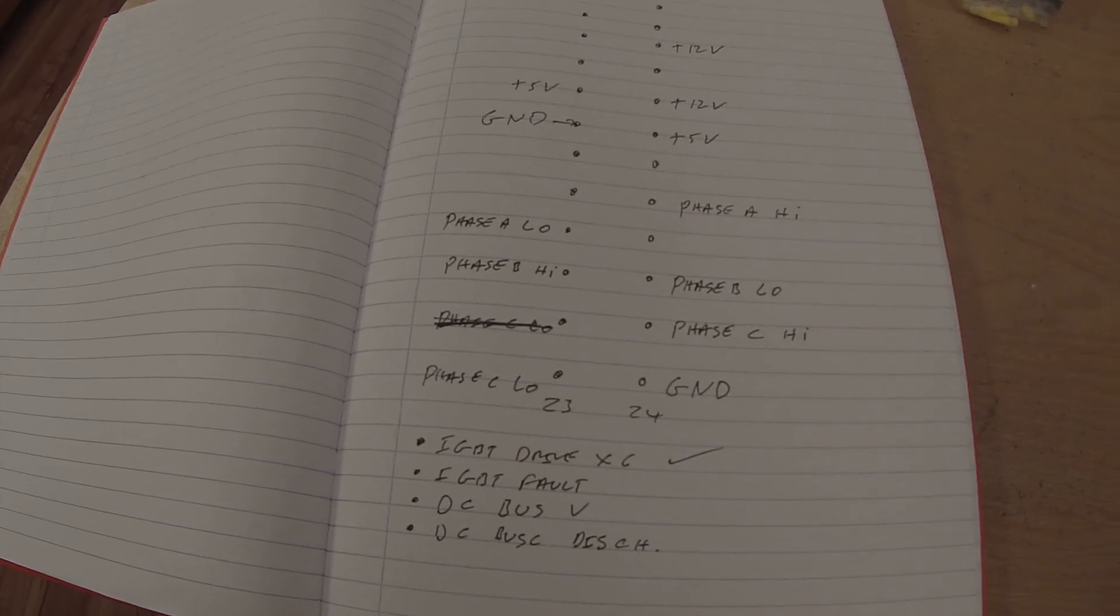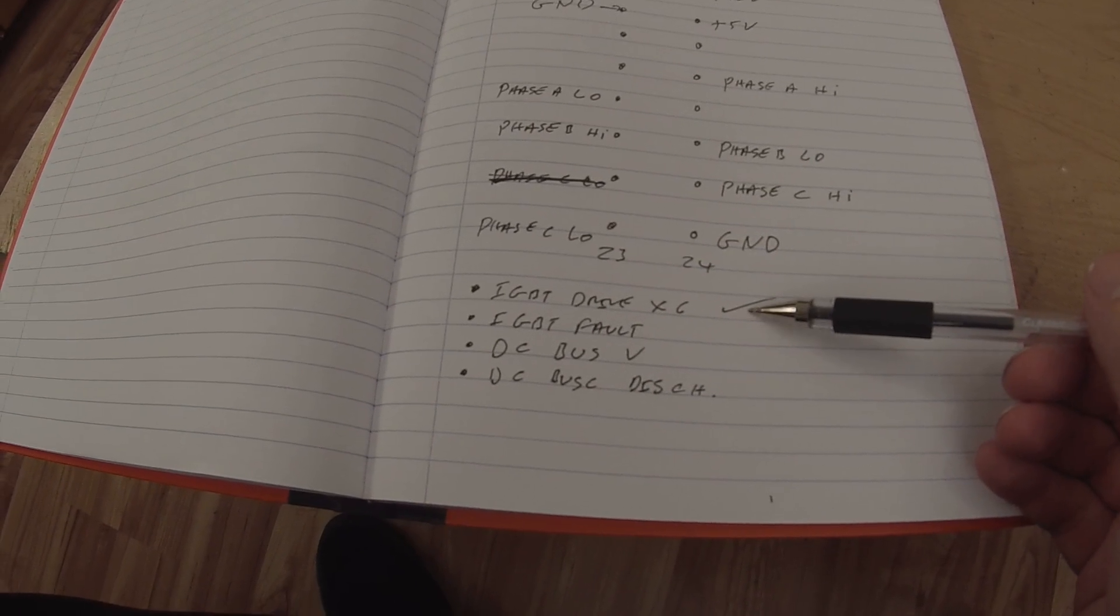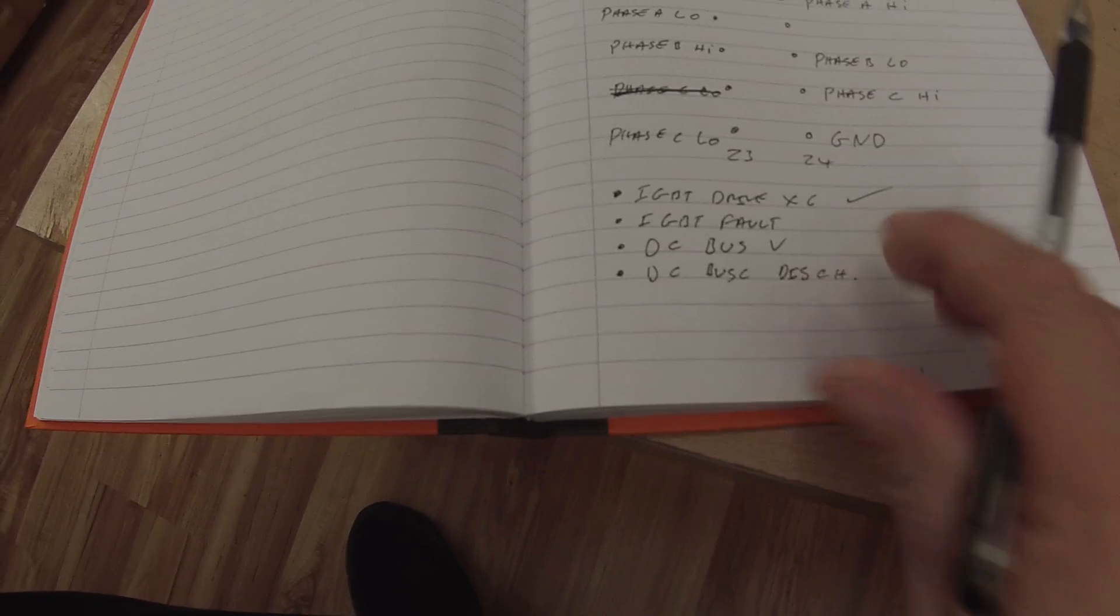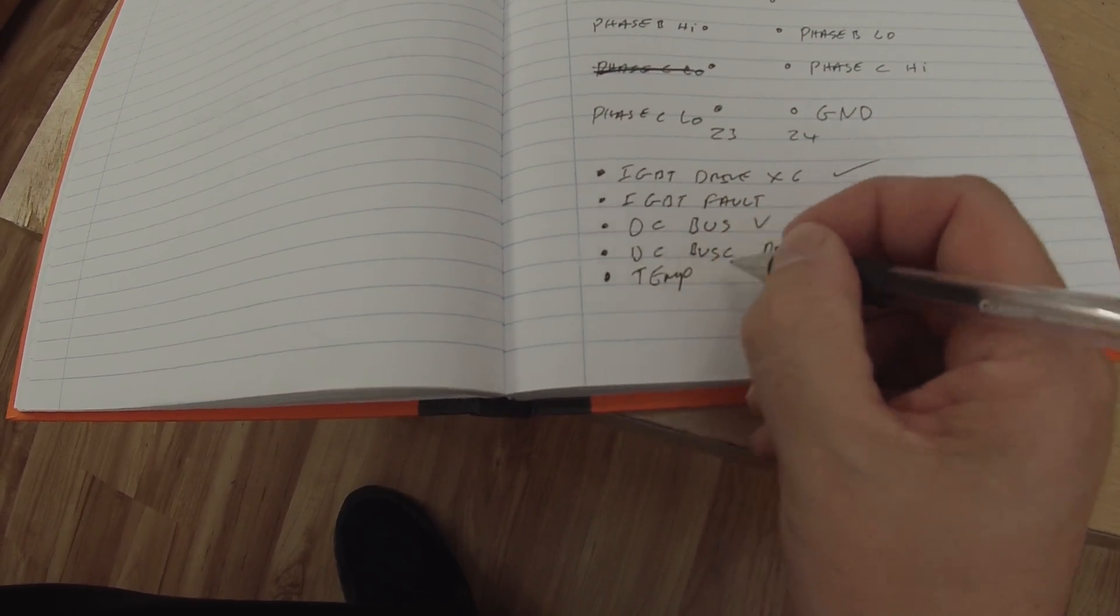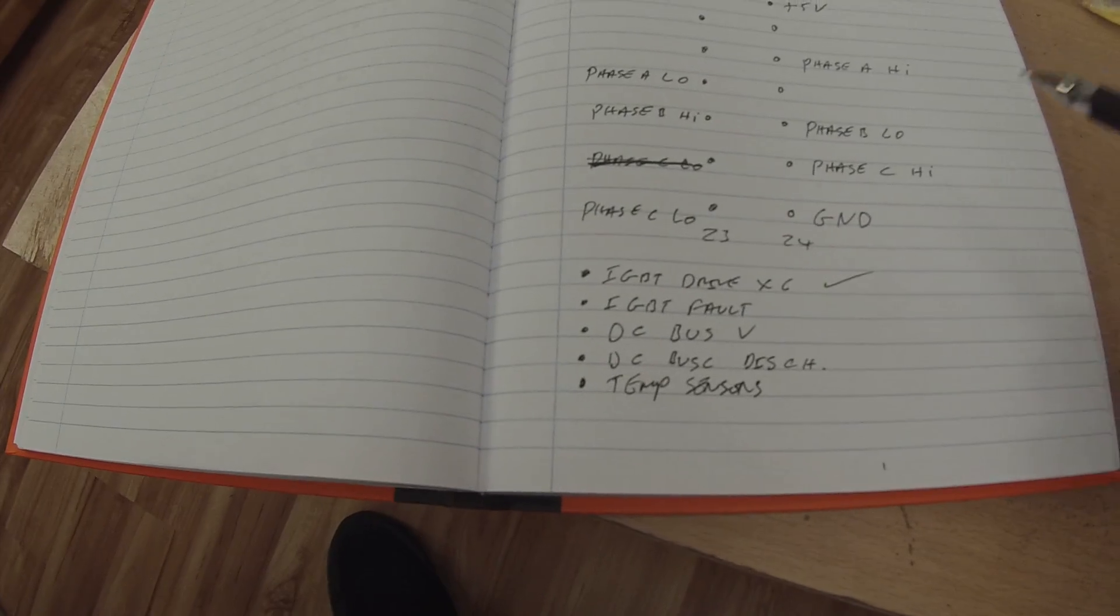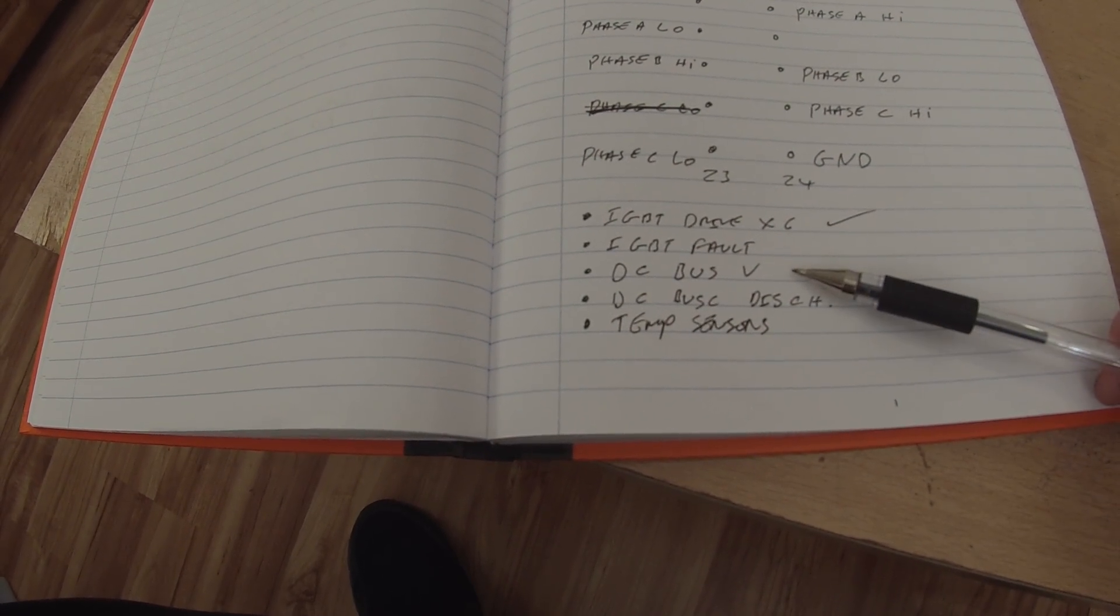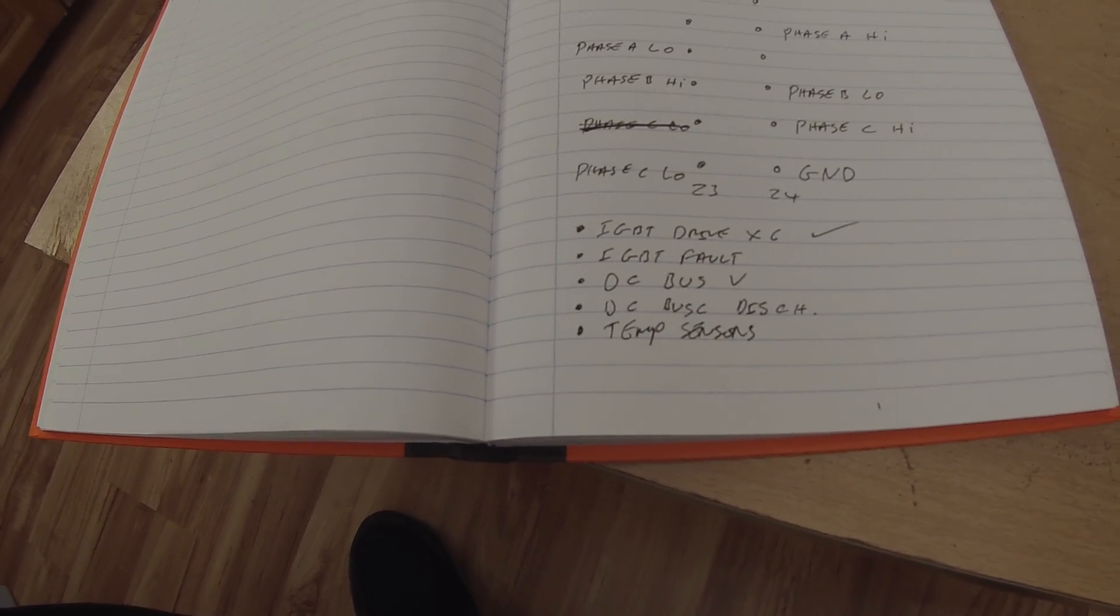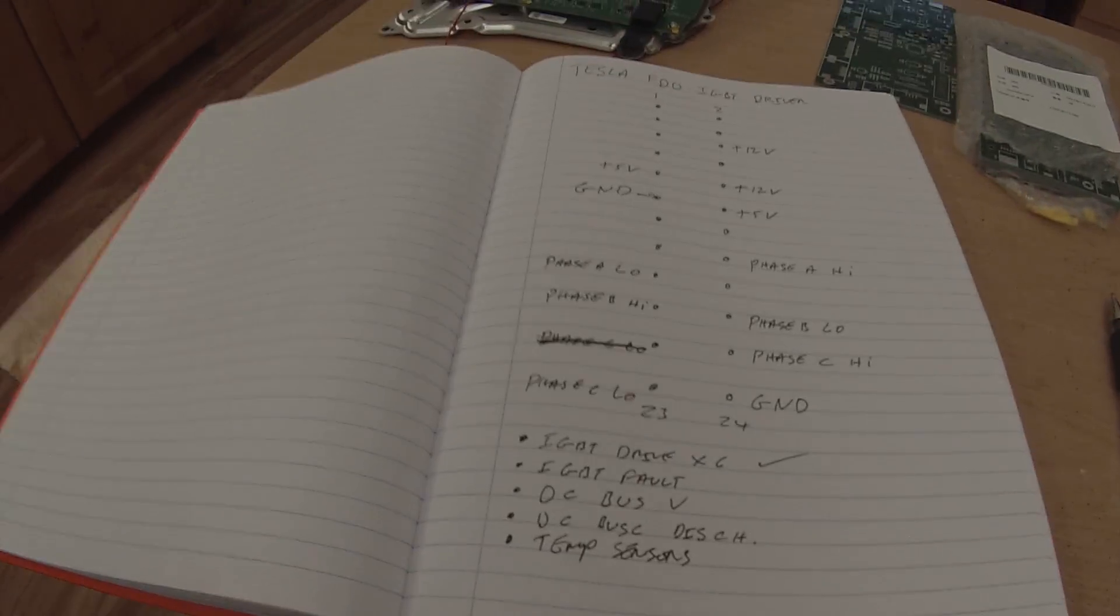If you want to have a look at this, just pause the video there. So that's our six IGBT driver signals. Other things that we have going on here, I just remembered I'm on camera, nothing like making a note. Temp sensors. So we have IGBT drivers, IGBT fault, we'll have DC bus voltage measurement, DC bus discharge, and of course temperature sensors that I just managed to remember now.